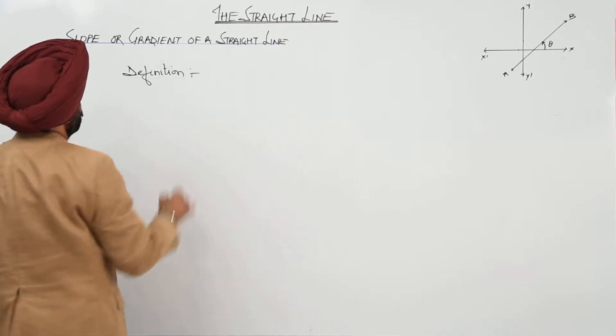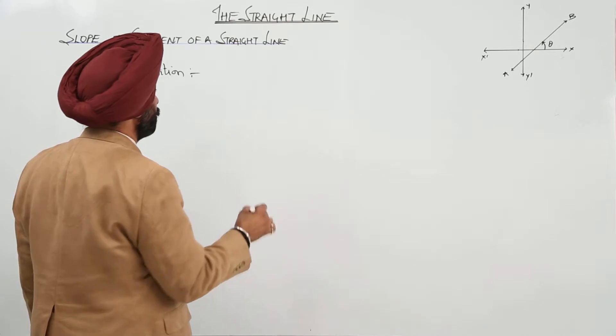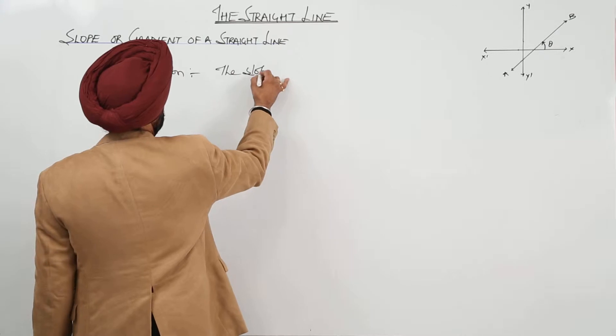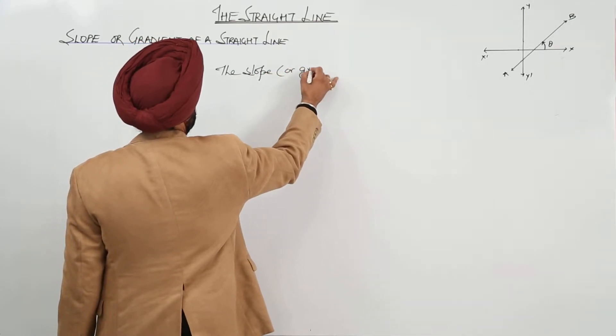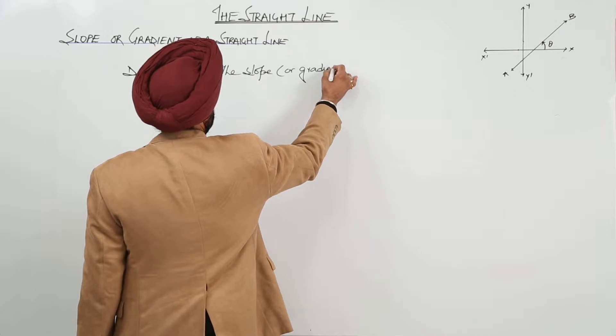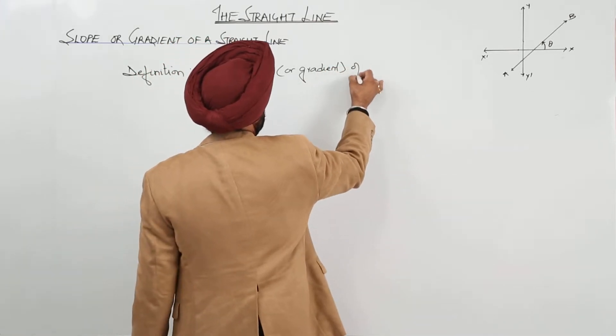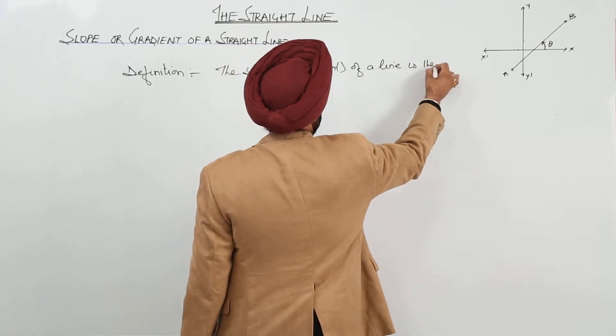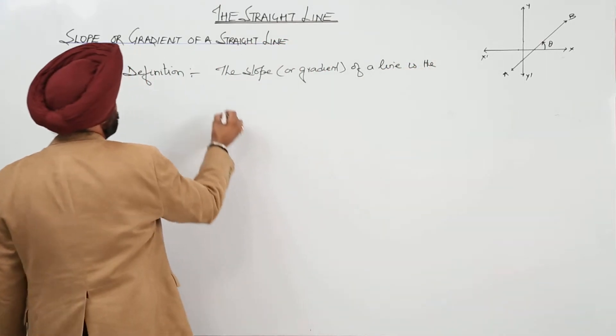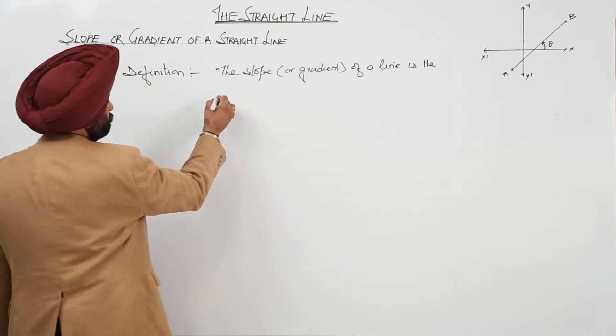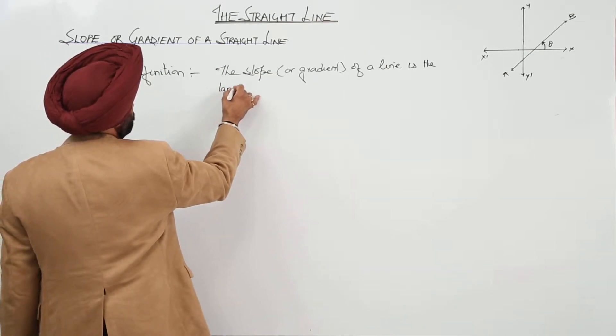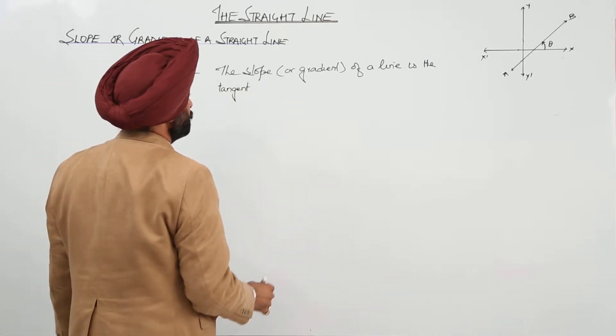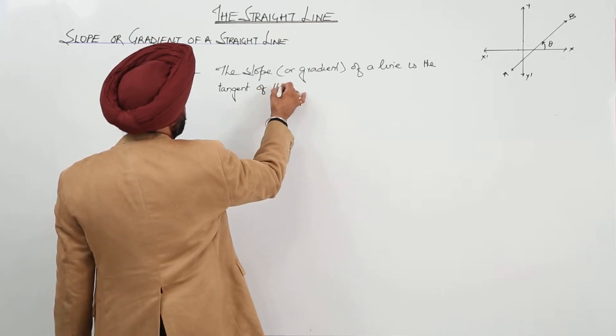Now, what definition says for slope of a straight line: the slope or gradient of a line is the tangent of the angle